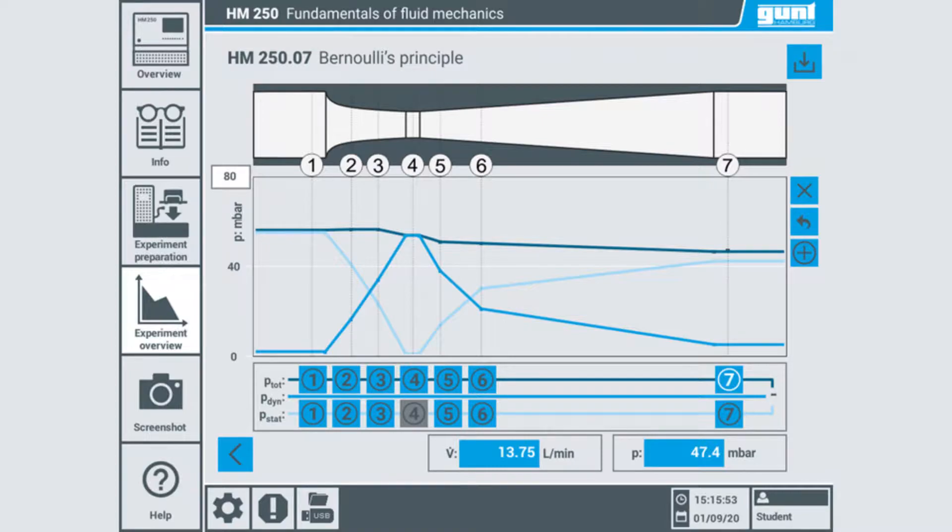Now that we have taken all the measurements, we can see from the graph that the total pressure remains fairly constant with a downward trend. This is due to pressure losses because of pipe friction within the Venturi nozzle.